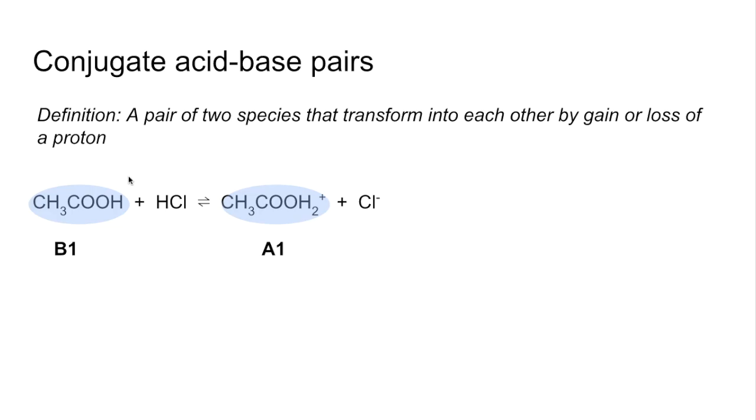So where's the proton coming from that this is accepting? Well, it's obviously coming from the HCl. That's donating a proton and becoming that. Going the other way, that can accept a proton and become that, so they're a pair. Obviously the HCl would be an acid, so we'll call it A2 now because it's a different pair to the 1s. And there's B2.